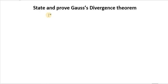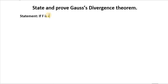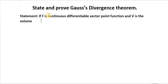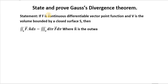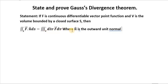Gauss-Divergence Theorem Statement: If F is a continuous differentiable vector point function and V is the volume bounded by the closed surface S, then the double integral over the surface S of F dot N̂ dS is equal to the triple integral over the volume V of divergence F dV, where N̂ is the outward unit normal vector.